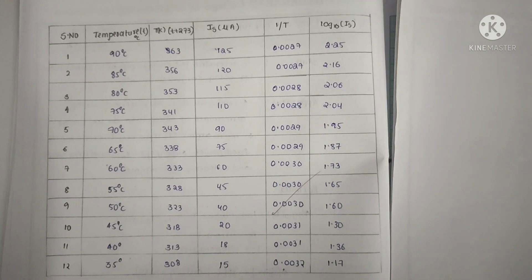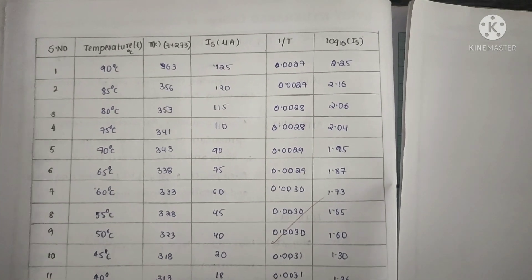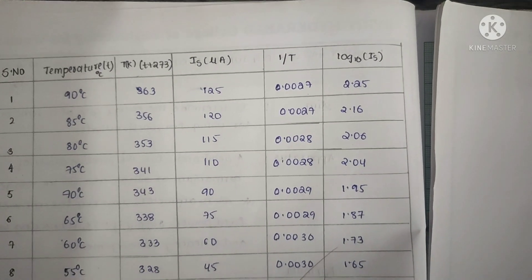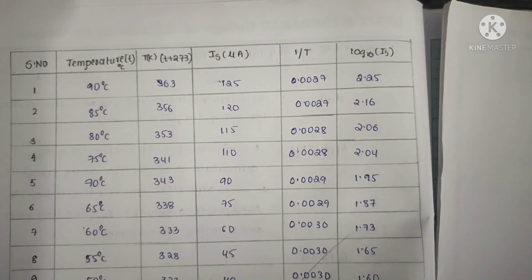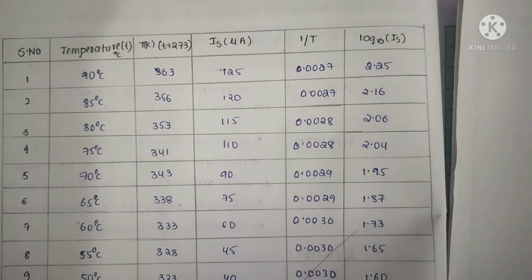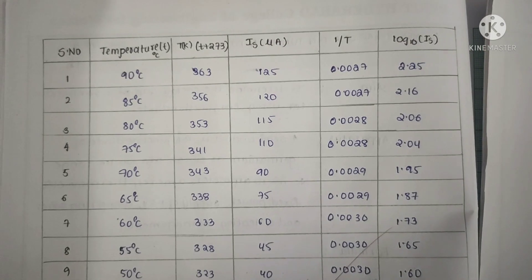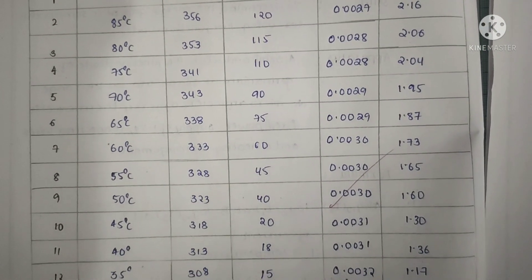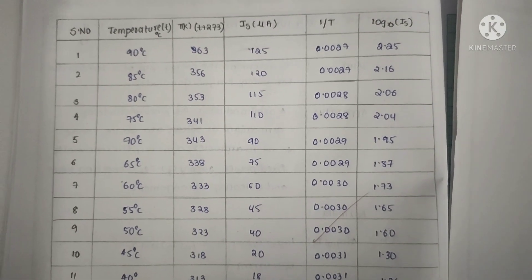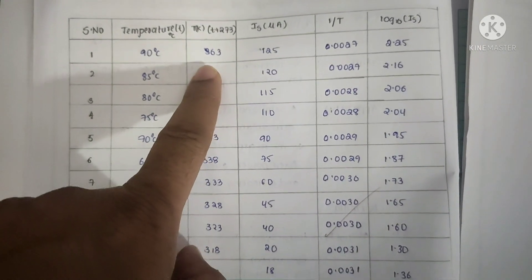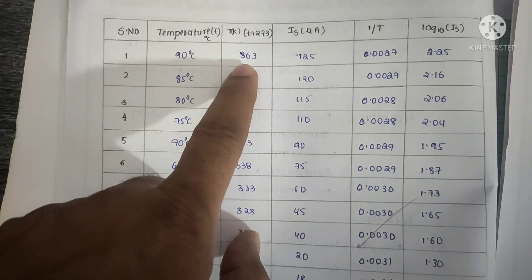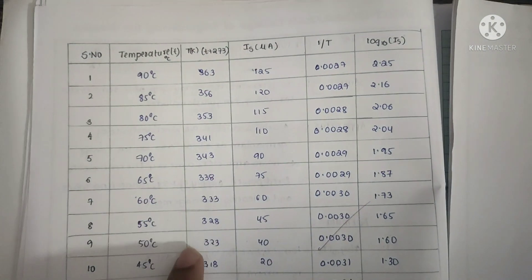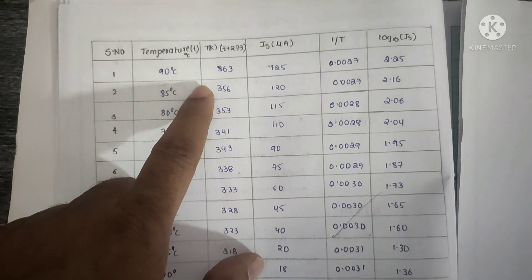These are the observed values in the calculation of energy gap of a semiconductor. At 90 degrees, the current is around 125 microamps. The current values depend upon the instrument and the semiconductor, and the amount of energy supplied decides the current magnitude. The temperature in Celsius is converted to Kelvin by adding 273 — so 90 degrees Celsius becomes 363 K. This column represents the temperature in Kelvin, and the adjacent column is the current value.